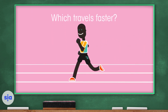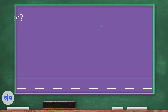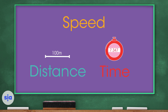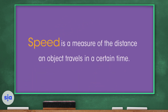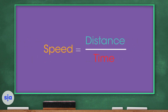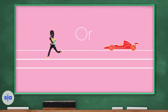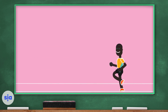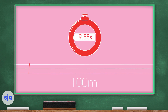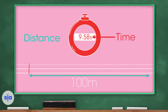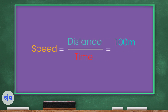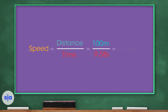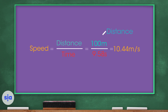Which travels faster — Usain Bolt or a Formula One car? In this video we'll find out how to calculate speed using distance and time. Speed is a measure of the distance an object travels in a certain time, calculated using: speed equals distance divided by time. To compare them, we need to know how far they traveled and how long it took. Let's work out Usain Bolt's speed first.